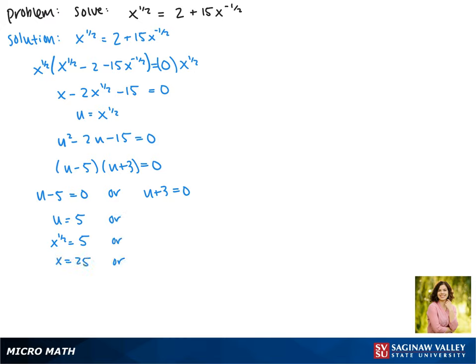Now we'll do the same thing with u plus 3. This gives us u equals negative 3. Substituting x back in gives us x to the 1/2 power equals negative 3. Now when we square both sides, this gives us x equals 9. Since this problem involves square roots which could be undefined if negative, we'll check for extraneous solutions.